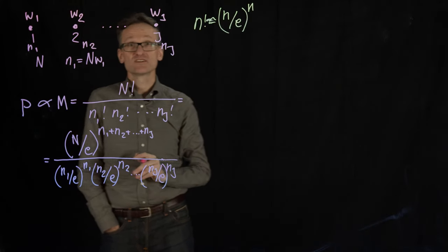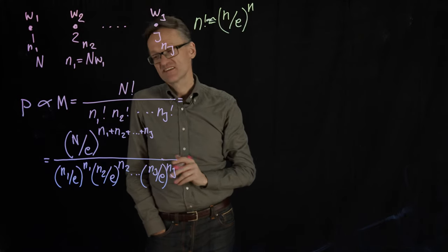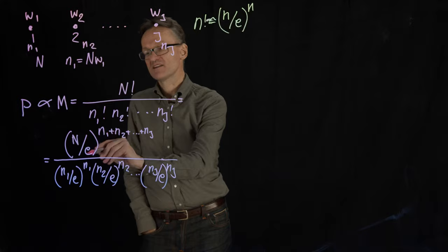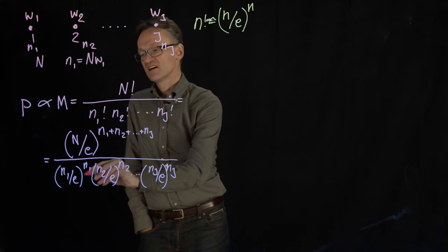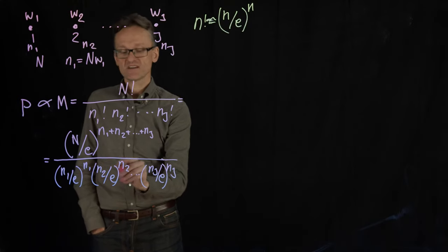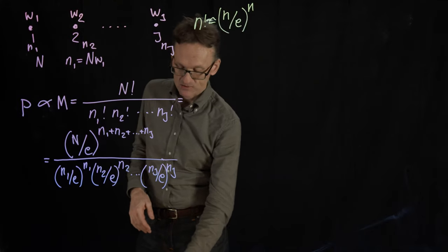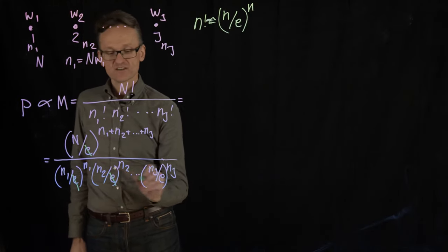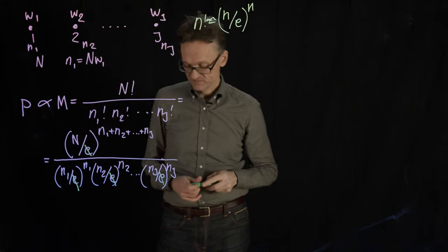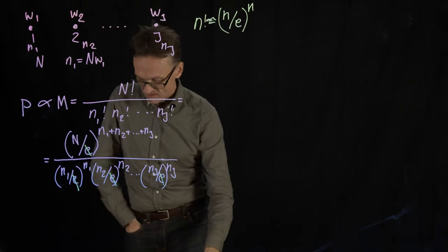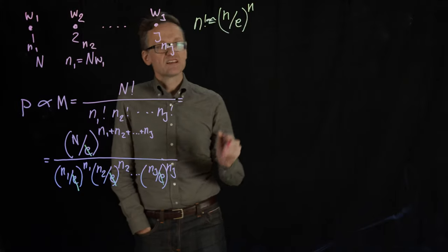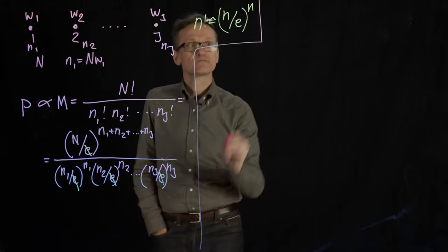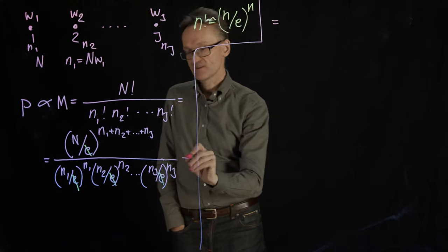I know, it doesn't look simple, but it is. This trick here, do you see here we have e raised to n1, e raised to n2, etc. And here I also have e raised to n1, e raised to n2. So I can simply strike those out. They will cancel each other. It's still not the world's most beautiful expression, but let's see where we get.